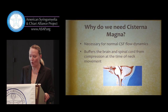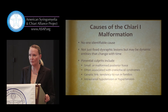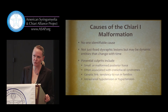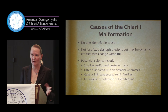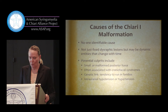Causes of Chiari malformation — there's no one identifiable cause. It's not just a fixed dysgraphic lesion but may be a dynamic entity that changes over time. Potential culprits include a small or malformed posterior fossa, often associated with craniofacial syndromes, and a genetic link that tends to run in families. Also intracranial hypotension — where something open in the spine pulls everything down — may be one reason a secondary Chiari develops later on. Intracranial hypertension, such as pseudotumor cerebri, pushing things down, is another potential factor.